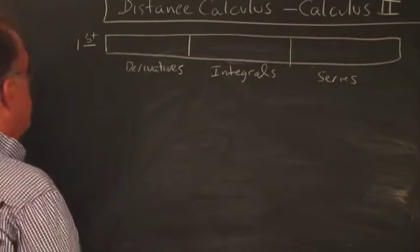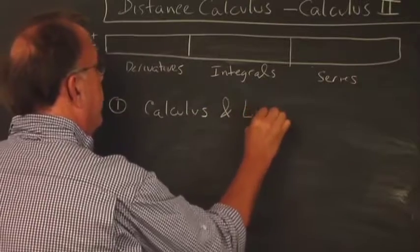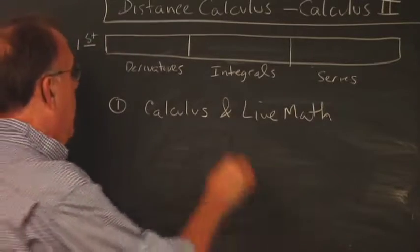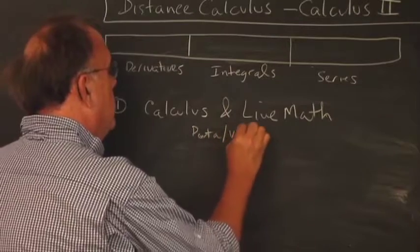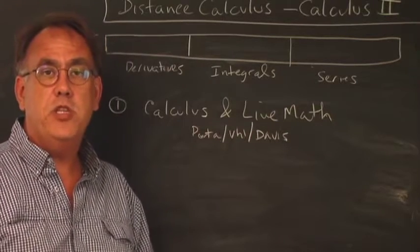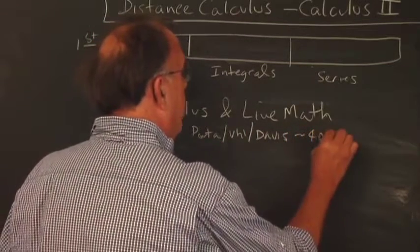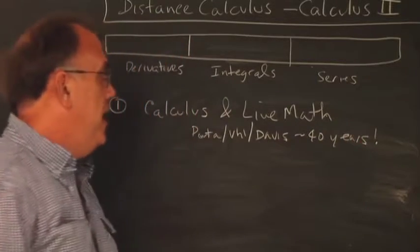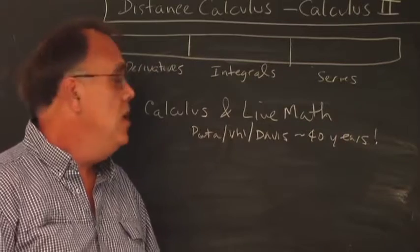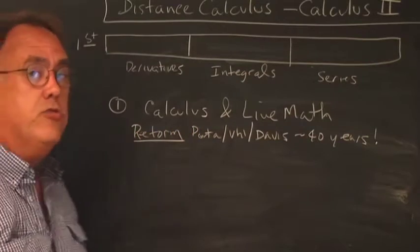The textbook that we use, or the curriculum that we use, is called Calculus and Live Math. It's adapted from Calculus and Mathematica by Porter, Uhl, and Davis. This curriculum was started at the Ohio State University and the University of Illinois at Champaign-Urbana, and it's about 40 years old now and has really stood the test of time. It's been used by probably hundreds of thousands of students by this time. It is definitely a reform-based curriculum and not a traditional-based curriculum.